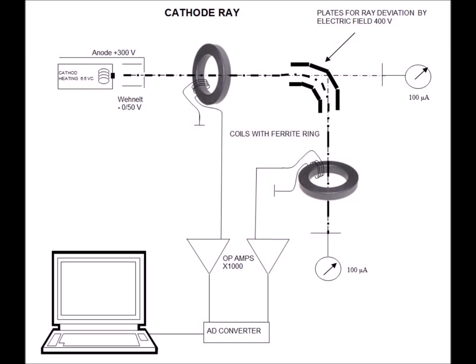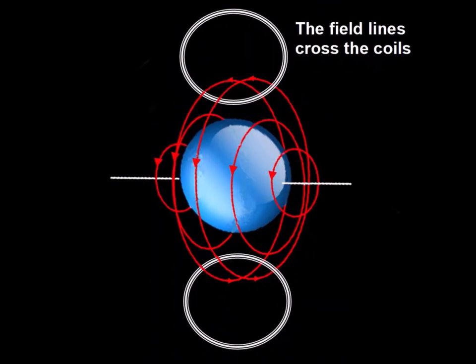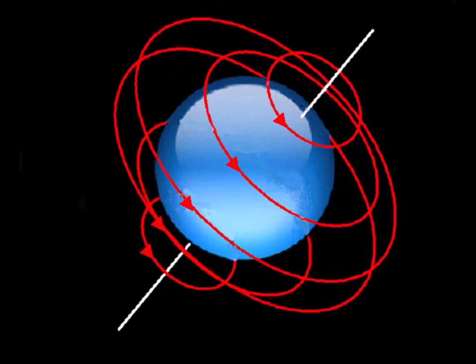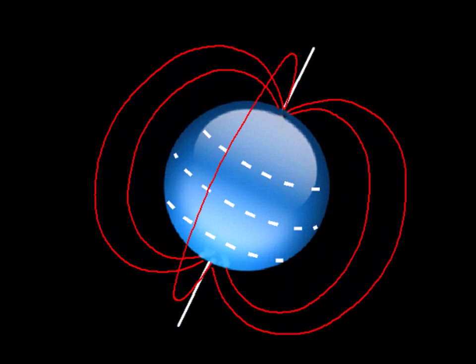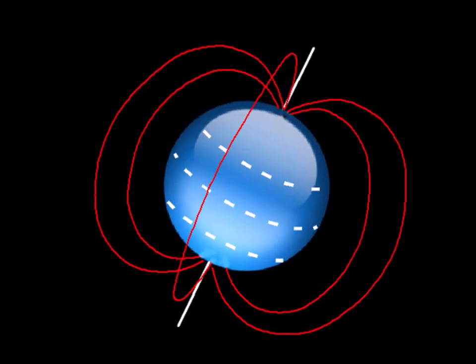A small detail will not have escaped the specialists. For the intrinsic magnetic field of the electrons to be detected by the coils of the sensors, it must have a rotational structure and not a dipole structure, which would be analogous to a tiny bar magnet as postulated by the standard model of quantum mechanics.